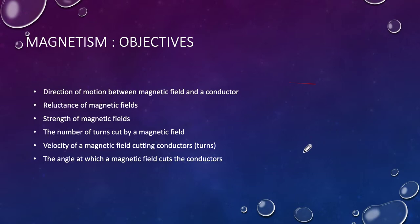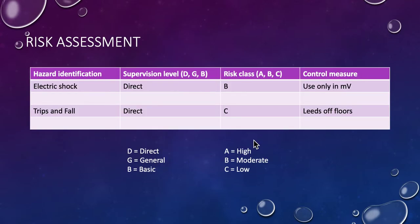Okay, there we go. Magnetism - what are the objectives? We're going to look at the direction of motion between magnetic field and the conductor, the reluctance of a magnetic field and strength of magnetic field, the number of turns cut by a magnet in a field, the velocity of the conductor in a magnetic field, and the angle at which the magnetic field cuts the conductors. From our theory, all those things should have some kind of effect.